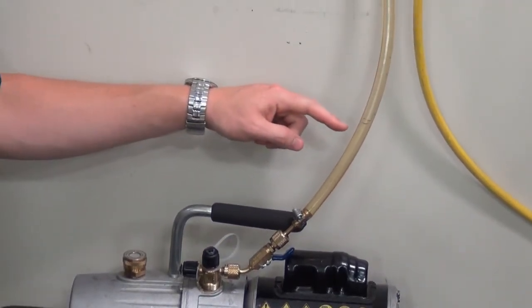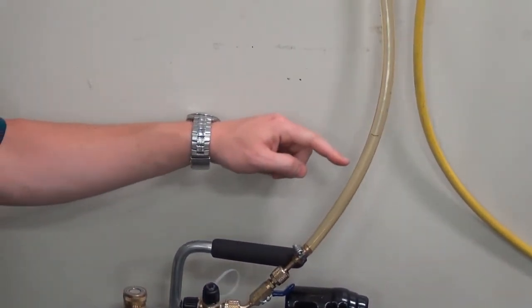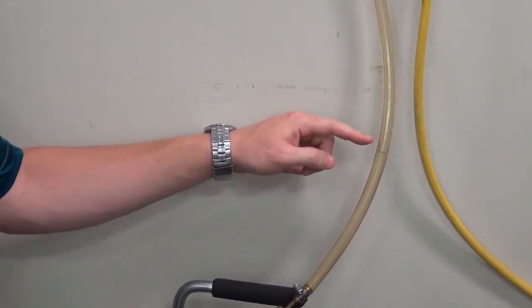You can see the vacuum pump oil migrating out of the pump and up this hose to the manifold and the system.